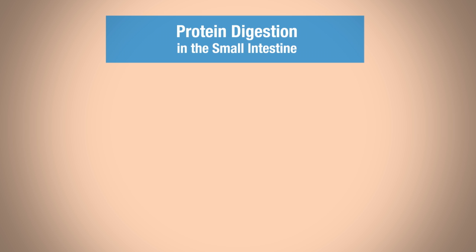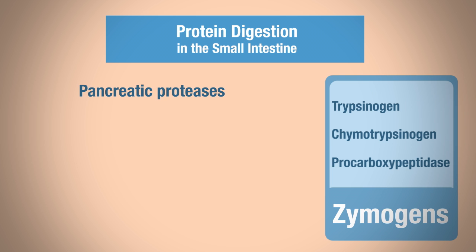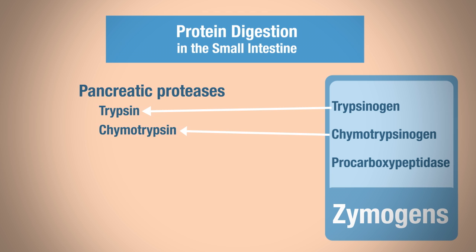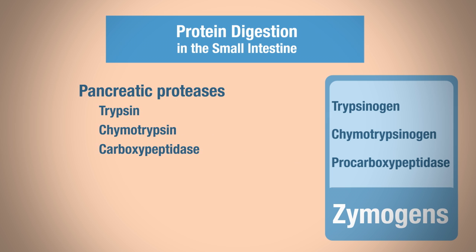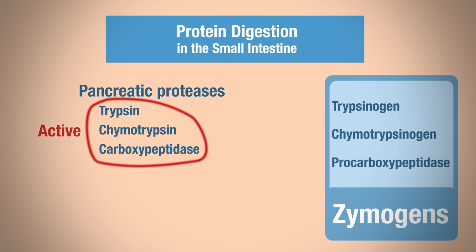Protein digestion also occurs in the small intestine, involving pancreatic proteases. The zymogens — trypsinogen, chymotrypsinogen, and procarboxypeptidase — are made by the pancreas as inactive precursor enzymes. Trypsinogen is a precursor to trypsin, chymotrypsinogen to chymotrypsin, and procarboxypeptidase to carboxypeptidase. The active forms — trypsin, chymotrypsin, and carboxypeptidase — are the ones that can catalyze reactions.